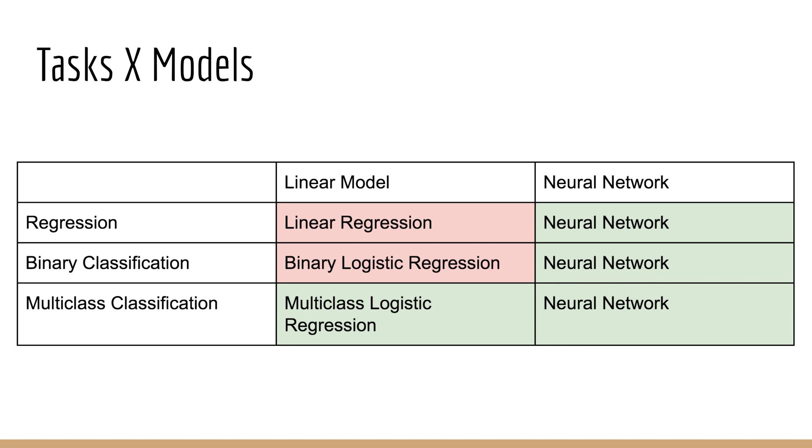As you can see, anything that has to do with neural networks is part of this course. But we also have one linear model which is part of this course, and that's multi-class logistic regression. What I want you to remember is that there's no mathematical reason for this choice. It's rather just a practical distinction. It's easier to learn about binary classification first before you learn about multi-class classification.